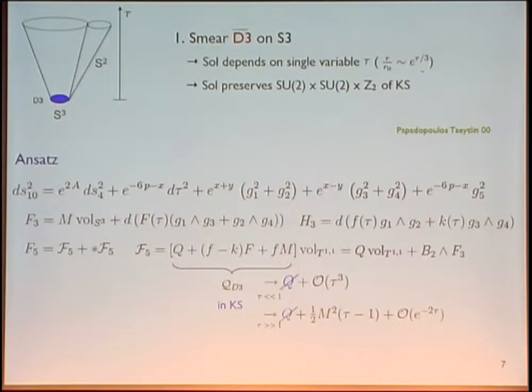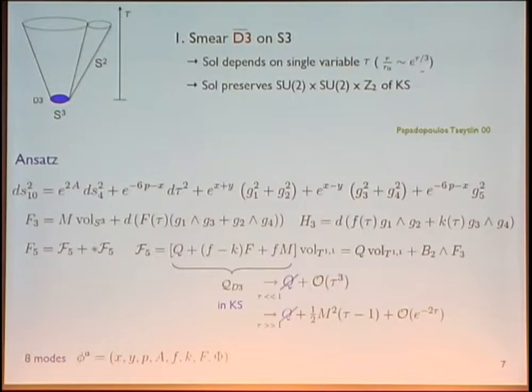We perturb around the solution with Q equals zero, which has a specific charge in the UV. The perturbation consists of eight modes: four modes in the metric, two modes in the NSNS three-form flux, one in the Ramond-Ramond three-form flux, and one perturbation to the dilaton. We are looking for a supersymmetry-breaking solution, which means we have to solve eight second-order equations.